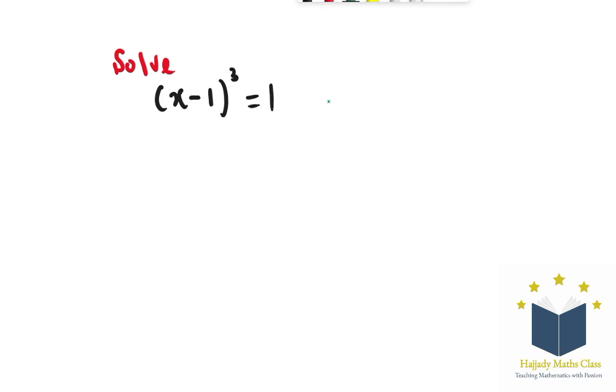The common mistake students often make is to cube root both sides such that you have your x to be 2. This method is very wrong, but today we are going to solve this such that we get three values for our x. The first thing for us to do is to have x minus 1 cubed minus 1, moving the right hand side to the left hand side.